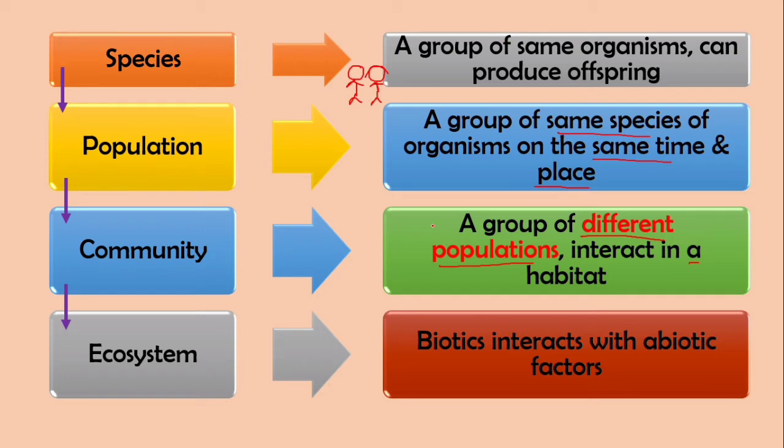And ecosystems, biotics interact with abiotic factors. We respirate using oxygen from the air, we drink from the water. Air and water is a kind of abiotic factor. So we interact with these abiotic factors, we call it as ecosystem.